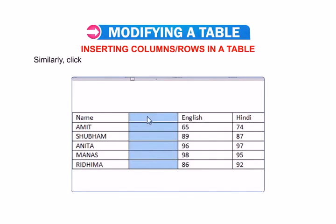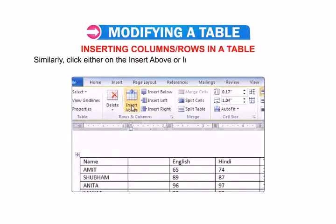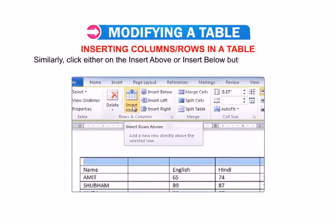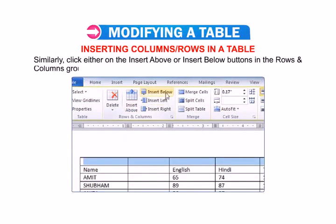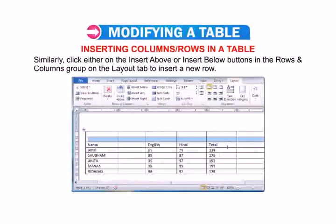Similarly, click either on the Insert Above or Insert Below buttons in the Rows and Columns group on the Layout tab to insert a new row.